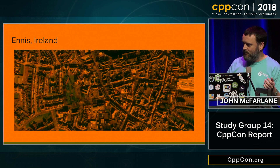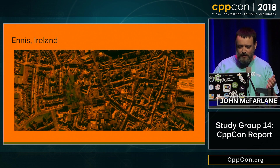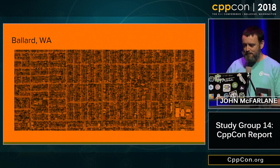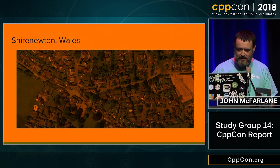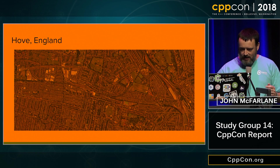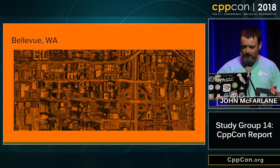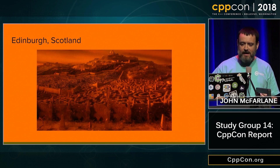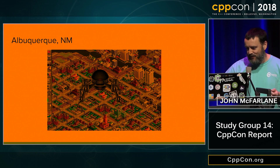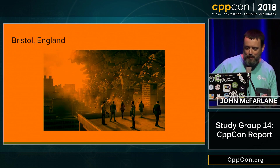Nobody really understood what he meant, so here are a few examples from both sides of the pond to make it clearer. This is Ballard, just over the water there. This is the village I grew up in — not square. Tempe, Arizona — square. Hove — not square. Bellevue, right here — square. Edinburgh — not square. Albuquerque — square. And Bristol — not square. Thank you.